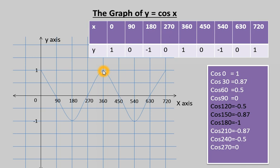We have now completed 0° to 360°. From 360° to 720°, the graph repeats — it is the same as 0° to 360°. This repetition continues at every multiple of 360°. The graph has a U-shaped wave pattern that repeats periodically.